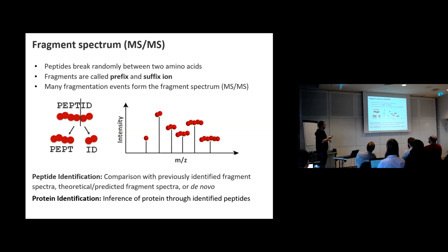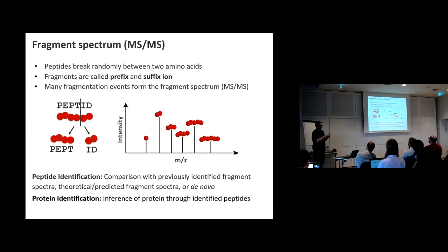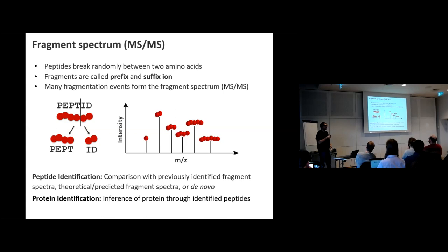When a peptide gets fragmented in the collision cell, it randomly breaks at certain backbone positions, creating so-called prefix and suffix ions. Many of these fragmentation events form the fragment spectrum. This allows us to identify what we measured in the mass spec. There are different approaches: comparing to previously identified fragment spectra, predicting or calculating theoretical fragmentation spectra, or de novo sequencing — determining the actual peptide sequence directly from the fragments. This identifies peptides, and a crucial second step is to infer the proteins from the identified peptides.